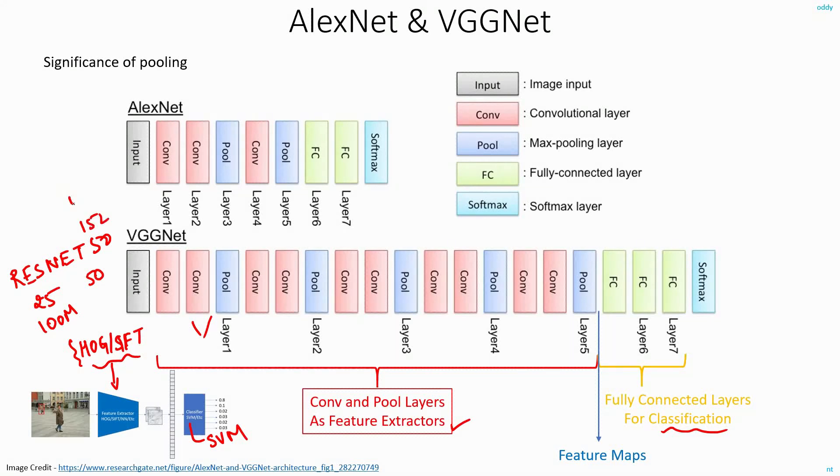And ResNet 152 has 152 layers. Because of the depth of the network, sometimes it becomes very difficult to understand what exactly your network is trying to learn. And that is the reason why they say that the classical computer vision based techniques are all hand-engineered feature extractors.